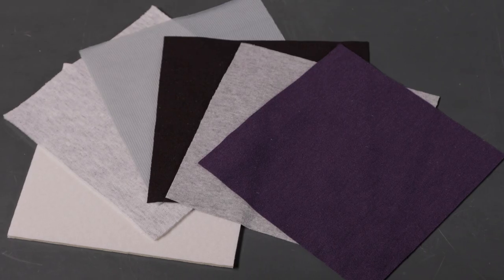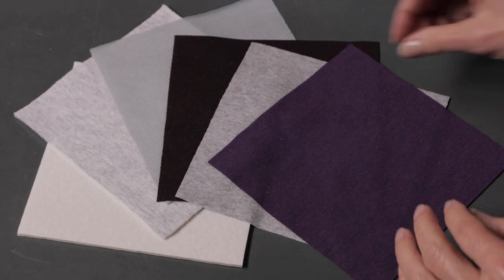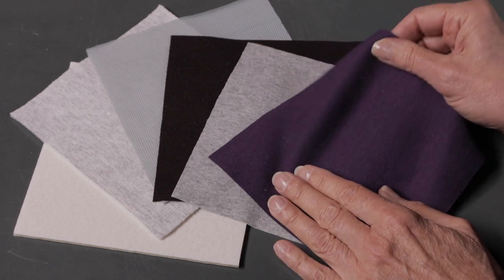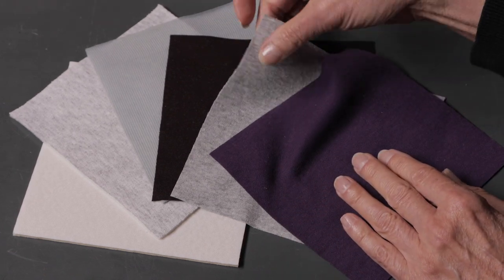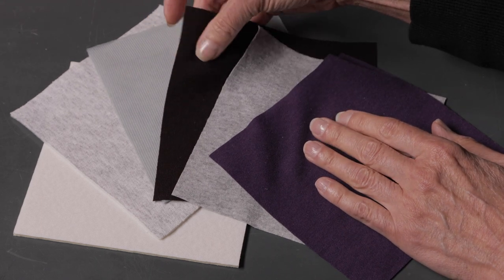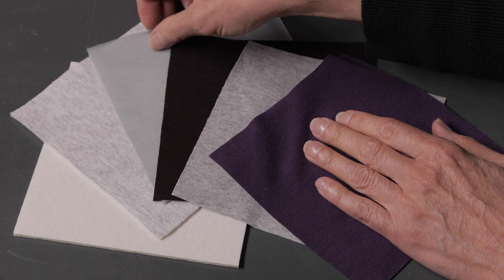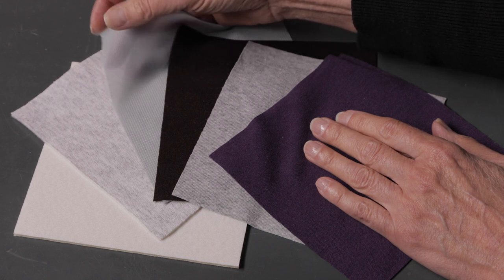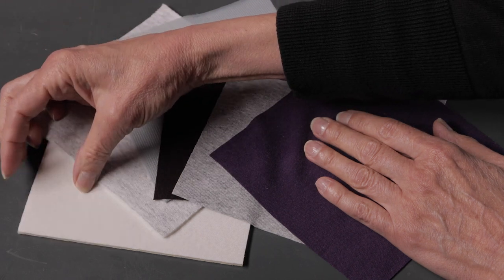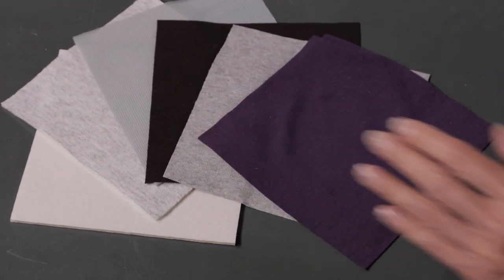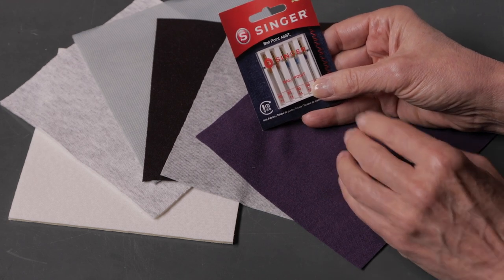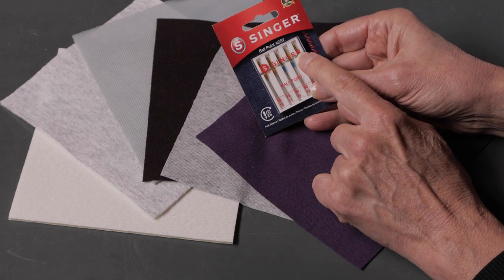It's important to use the right needle for the fabric you're sewing. For example, here we have stretchy fabrics: this is a t-shirt fabric, this is a ribbing, a stretchy rib, this is a ponte knit like a bottom weight knit, this is a tricot, here is a sweatshirt fleece, and even neoprene. For these types of stretchy fabrics you want to use a ballpoint needle. You'll know that it's a ballpoint needle because it has this gold color at the top of the needle.